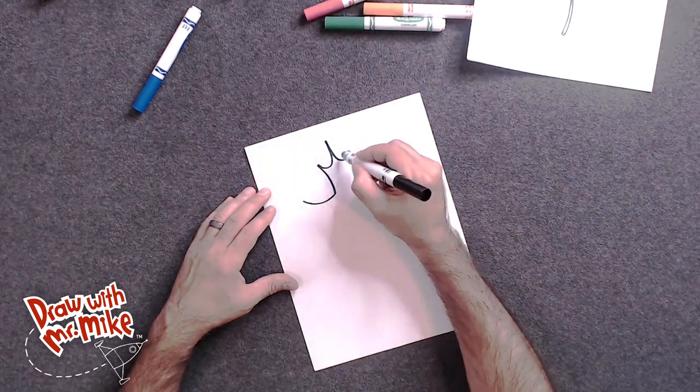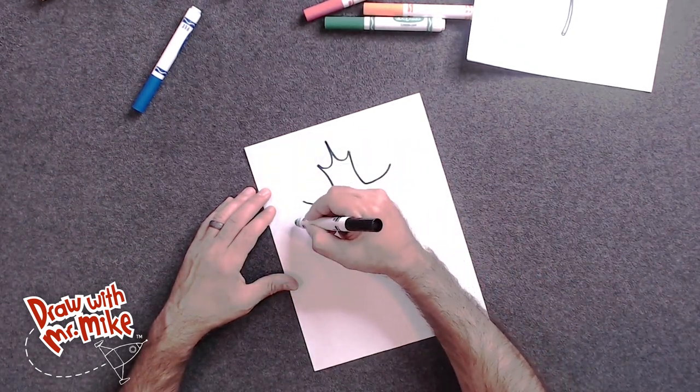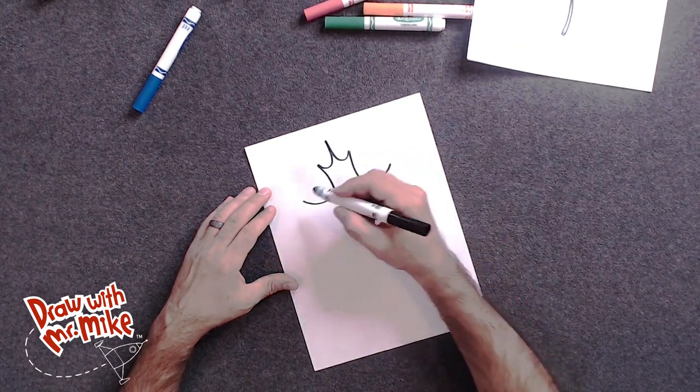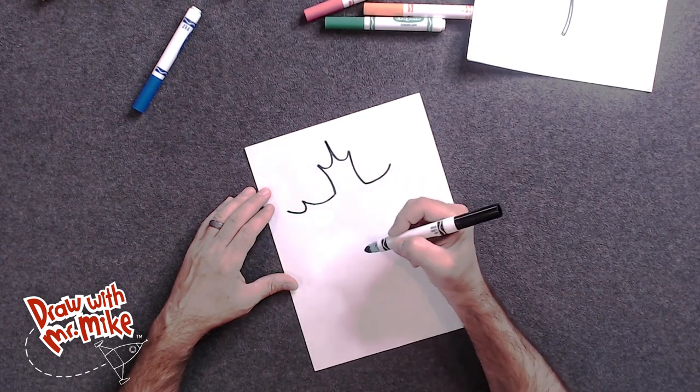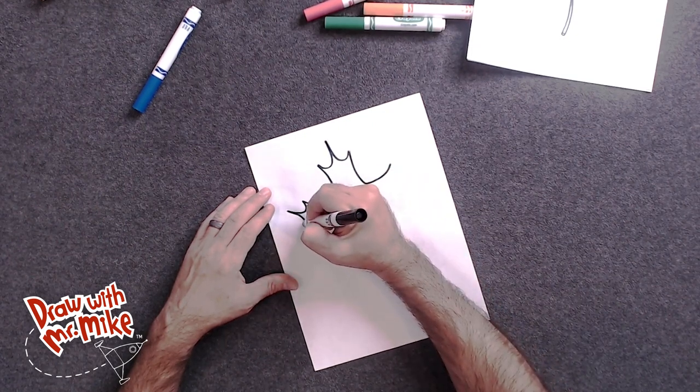And now we're going to do those same J's here on the tip of this part of the leaf and on this part of the leaf. Okay, so we'll take the backwards J and go up like this. And then we'll do a regular J this way.